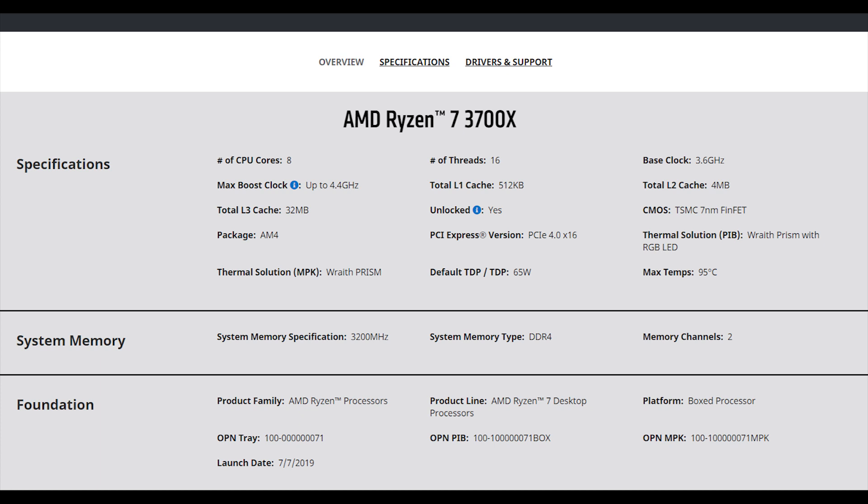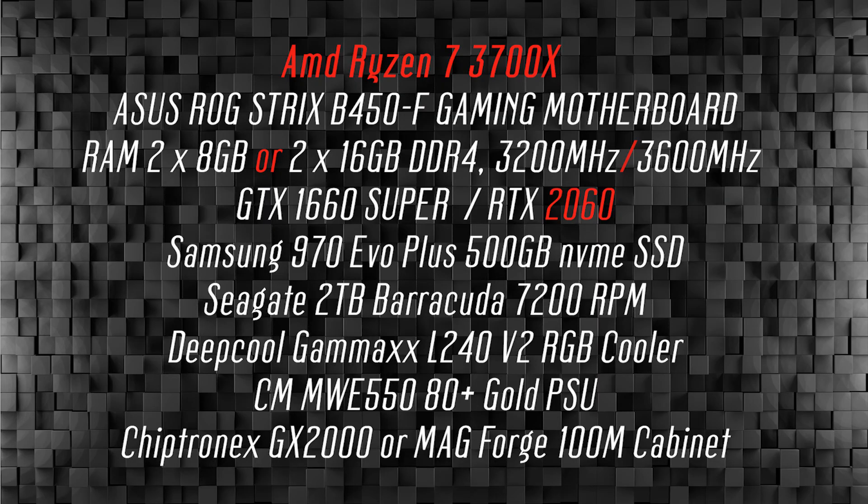The Ryzen 7 3700X has 8 cores and 16 threads, making it ideal for editing or high productivity related works. It has a boost of 4.4 GHz without overclocking. With overclocking, it can reach up to 4.8 GHz. For professional editors, this is the recommended processor. For 3D work, content creation, and wedding video creators, the 3700X is a perfect processor.